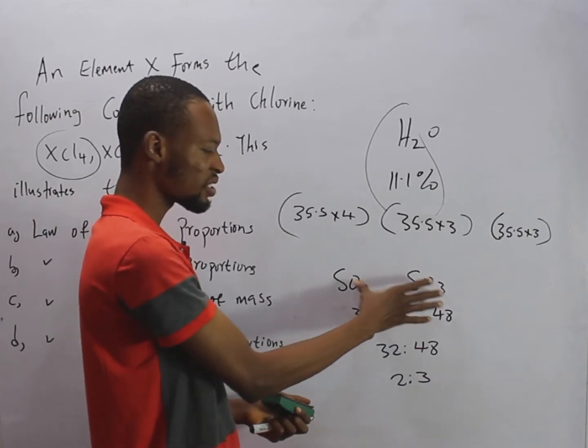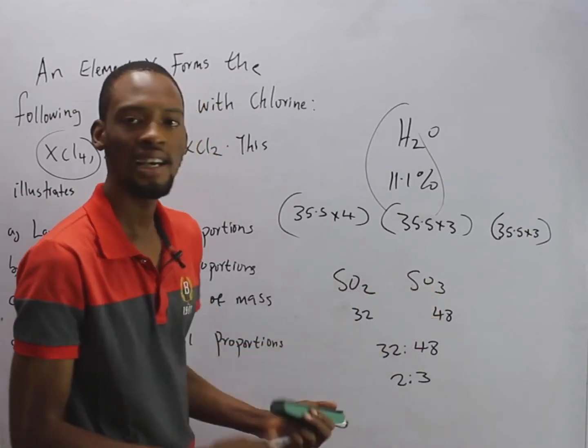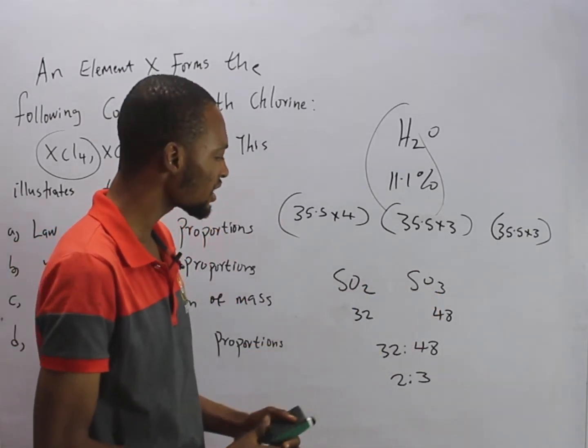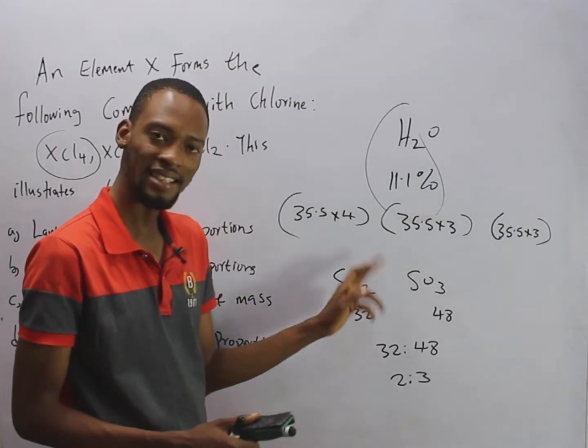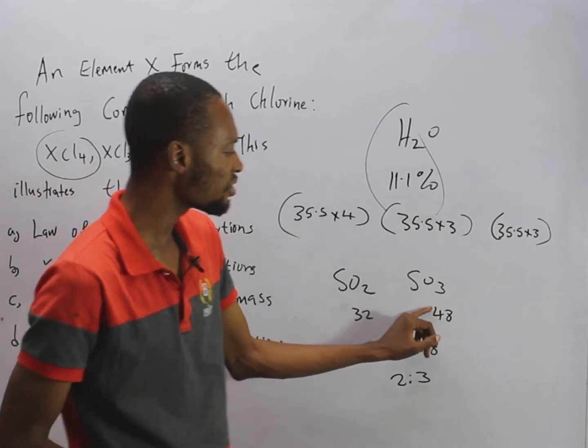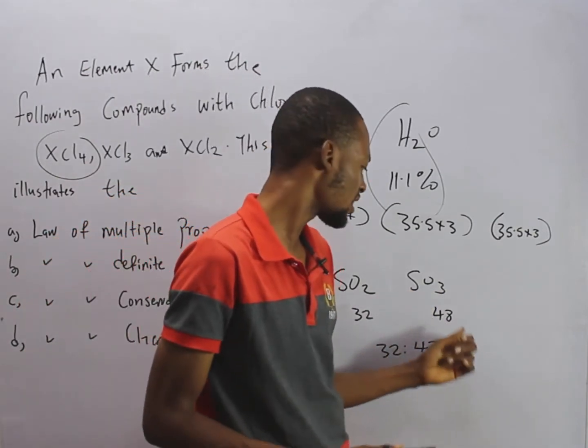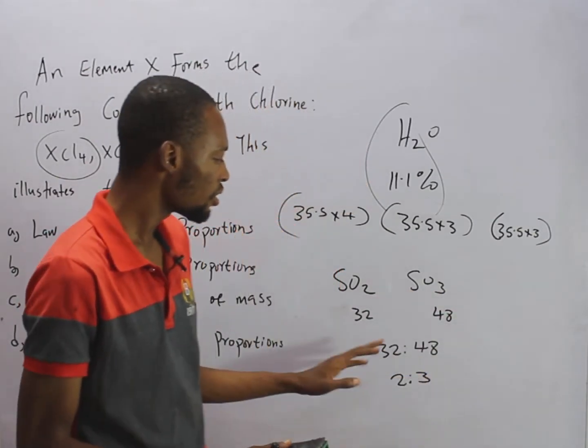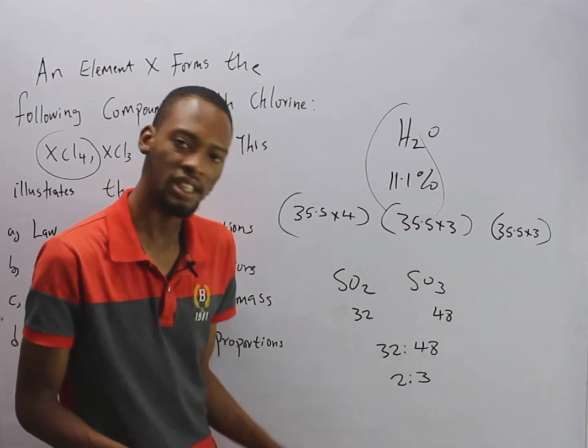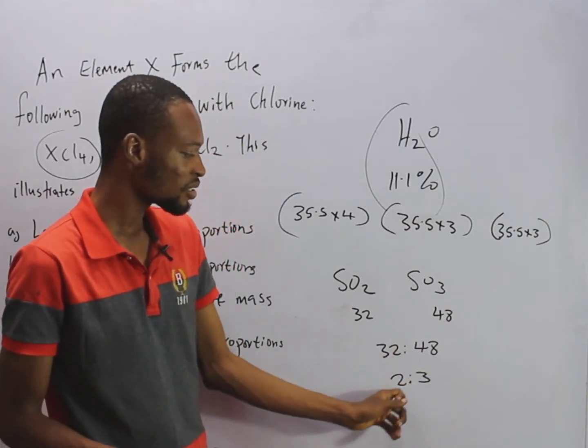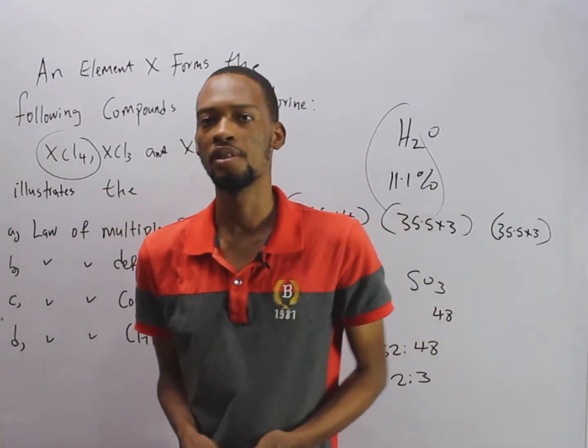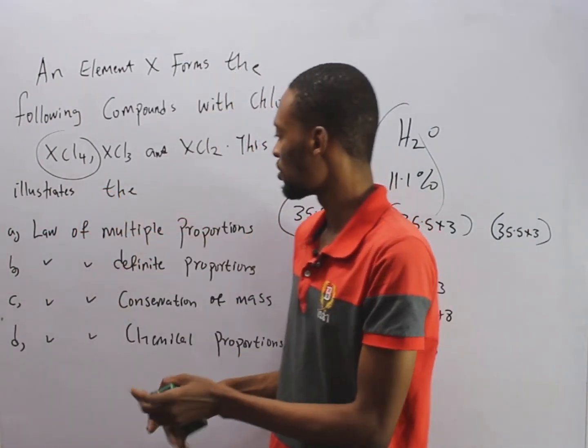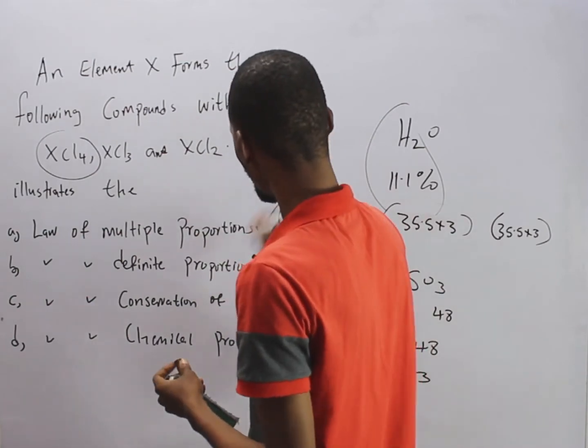Sulfur can react with oxygen to form SO2 and SO3. So in SO2, the mass of oxygen that reacts is 32, that's 16 times 2. In SO3, the mass of oxygen that reacts is 16 times 3. So this is 32 ratio 48. Once you divide both sides, you get 2 ratio 3. So they are in simple multiple proportions. So that is the law of multiple proportions.